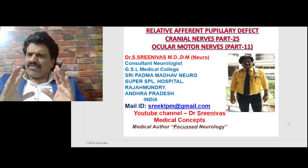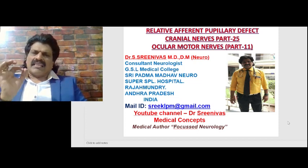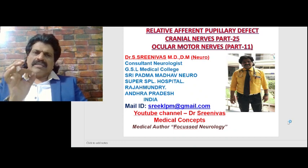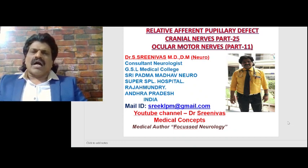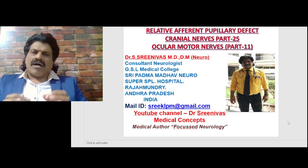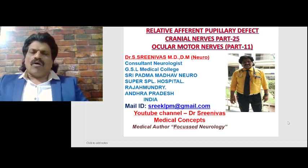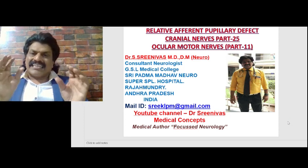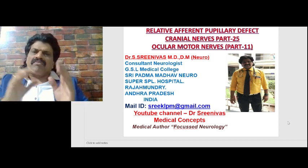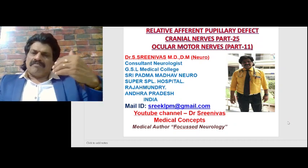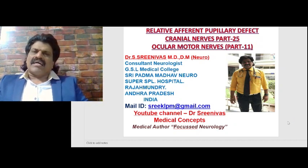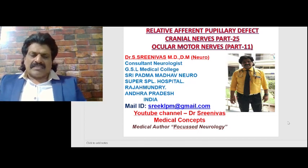Today we are going to talk about a very interesting topic, the relative afferent pupillary defect, otherwise known as RAPD. As the name suggests, it is relative — that means you have to compare with the other pupil. Afferent means the second nerve is affected, and it is a pupillary defect. So the name itself is self-explanatory.